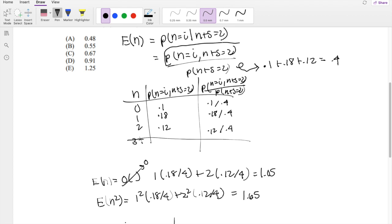So when we find the variance of n, plugging it back into our formula we have earlier, 1.65 minus 1.05 squared, which is equal to 0.5475, which is the closest to 0.55, which is your answer, B.